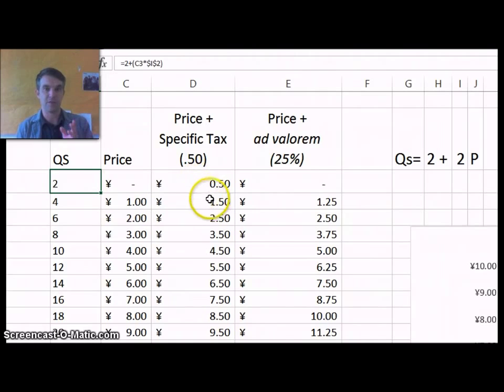The difference between a specific tax and an ad valorem tax was simply how much tax was applied. So here, instead of it being 50 cents, it's going to be 25%. So if it was going to take 1 yuan for the producer to supply 4, well, 1 yuan plus 25% equals 1.25, so that means they'll raise their price to 1.25 in order to supply 4.